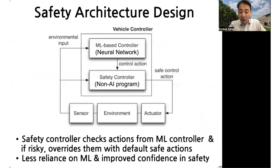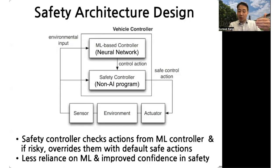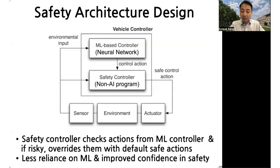To overcome this problem, one possible way to design the architecture for the vehicle software is as follows. In this architecture, we have two different types of vehicle controllers: one based on machine learning, and another called the safety controller. Normally, the action generated by the machine learning controller is used to maneuver the vehicle. But the safety controller sits between the machine learning controller and the actuator, and if it decides that the machine learning action is unsafe, it overrides it with a default safe action. The key idea is that the safety controller is based on traditional non-machine-learning logic, which is much easier to analyze and understand, ensuring that even if the ML component makes a mistake, the overall system behaves safely.